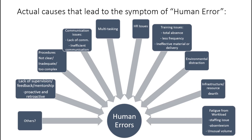Let's look at some of the real root causes responsible for the symptom of human errors. When you ask the question 'why did the human make the error,' you can come up with various actual root causes. It could be fatigue from workload, led by staffing issues, absenteeism, or unusual volume of work. It could also be infrastructure or resource deficits, or perhaps environmental distractions in the workspace. It could also be training issues, such as total absence of training.